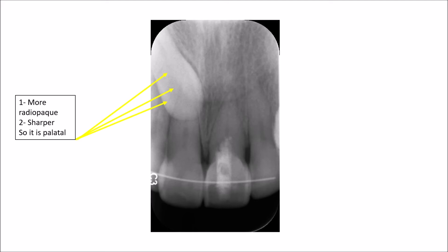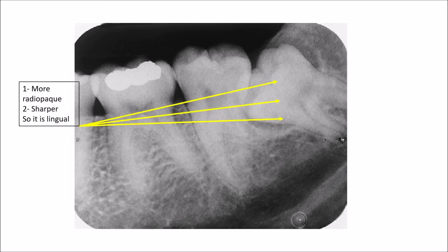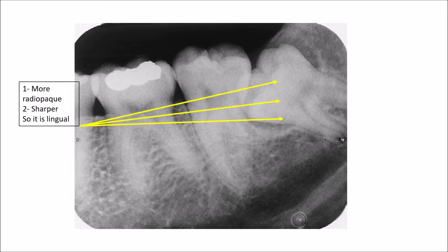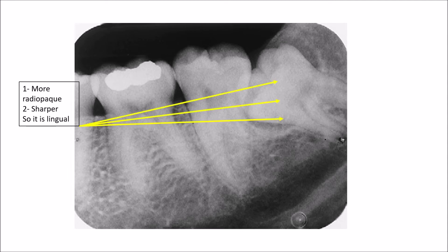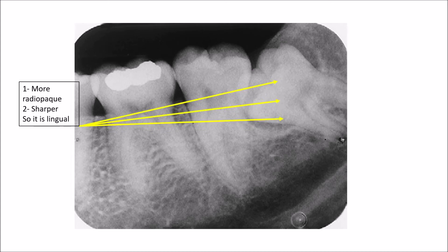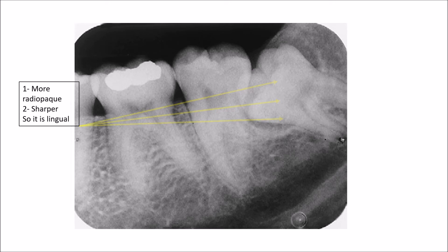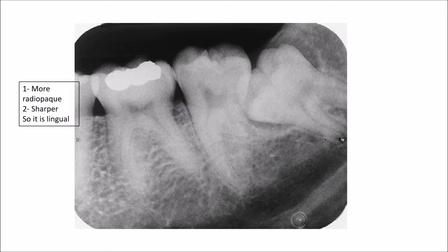Now let's look at the periapical radiograph showing the posterior teeth — molars six, seven, and eight. You can see the wisdom tooth is impacted in a mesioangular direction, and most of the tooth has actually impacted except the distobuccal region, which appears to be partially impacted in soft tissue. Even so, it is not really possible to tell from this radiograph whether the crown of this tooth is located in a lingual or in a buccal direction.